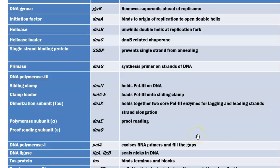Here, the important enzymes involved in replication and their genes are recollected. The important enzymes include DNA gyrase, helicase, single-strand binding protein, primase, DNA polymerase 3, DNA polymerase 1, and finally DNA ligase. Their respective functions have been shown in the third column. You can read through and get acquainted with the enzymes associated with DNA replication.